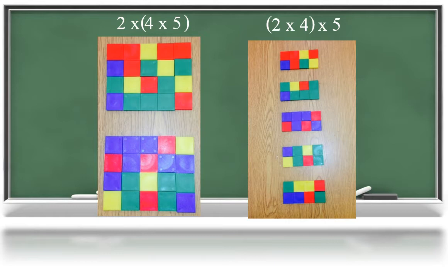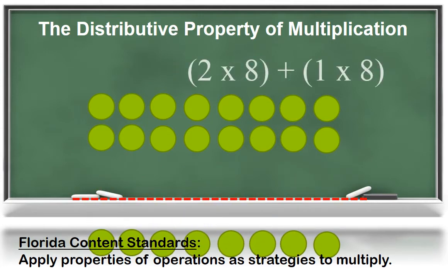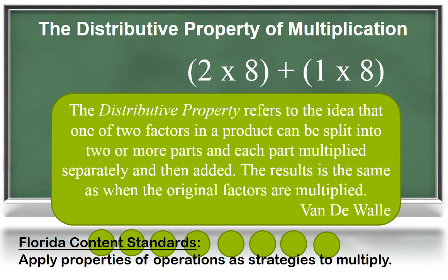Now we're going to discuss the distributive property of multiplication. Notice the array models the expression three groups of eight, or three rows of eight. To find the product, I could break apart this array into two smaller problems: two rows of eight and one row of eight. Then if I add those two products, I get the product of the original problem, three times eight. This models the distributive property, which refers to the idea that one of two factors in a product can be split into two or more parts and each part multiplied separately and then added. The result is the same as when the original factors are multiplied.